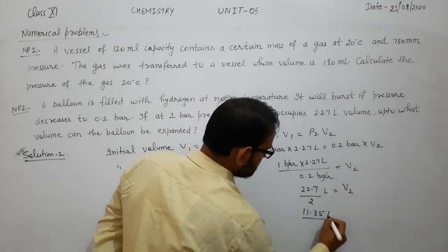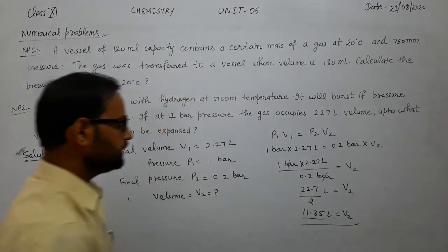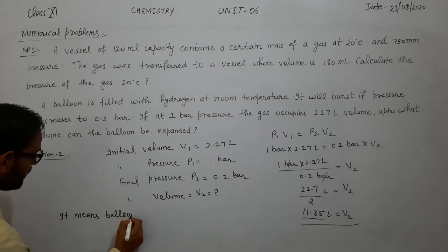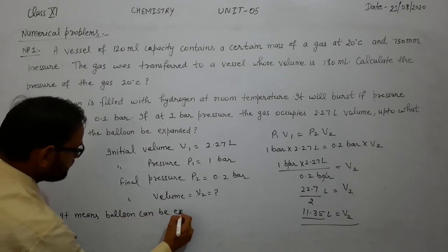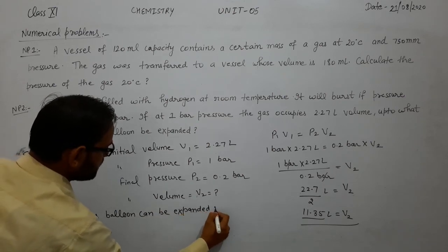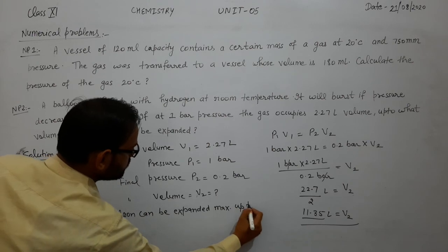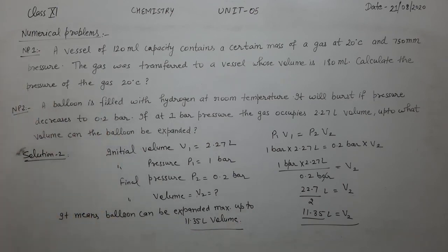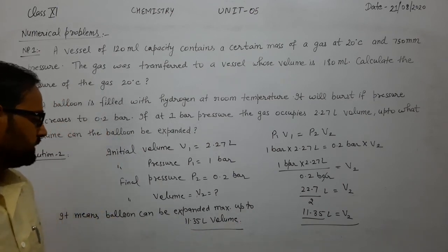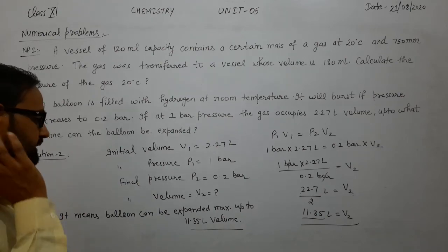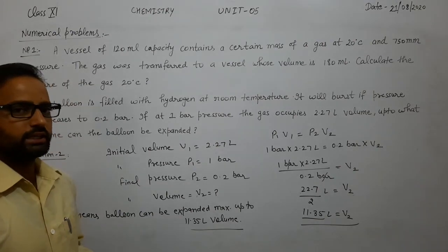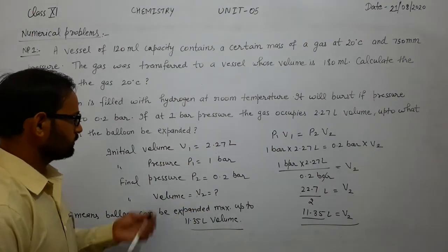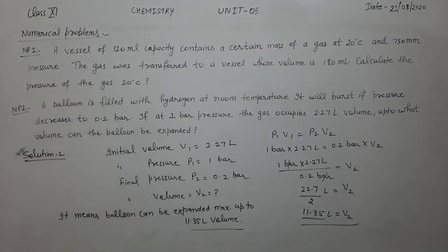V2 is equal to 11.35 liter. This means the balloon can be expanded to a maximum of 11.35 liter volume. When the pressure decreases to 0.2 bar, the balloon can expand up to 11.35 liter, and beyond that it will burst. Let us see the next numerical problem.